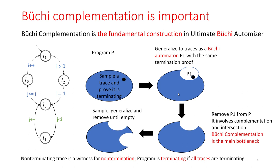To prove program termination, we need to prove all the traces in a program are terminating. Büchi Automata first sample a trace and prove it is terminating, then generalize these traces to traces as a Büchi Automaton with the same termination proof. We then remove those terminating traces from the program and continue in this way until we either find a non-terminating trace or have removed all the traces, which means the program is terminating.